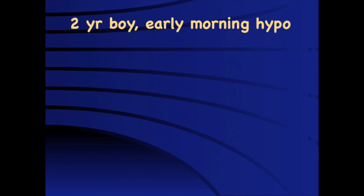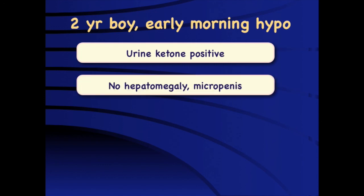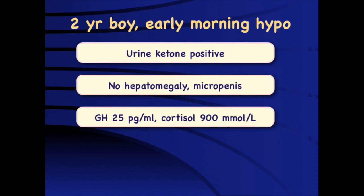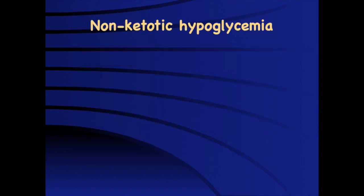Case 4: A two-year-old boy with early morning hypoglycemia, found not arousing in the morning with very low blood sugars. Urine ketones positive, no hepatomegaly, no micropenis, and growth hormone and cortisol levels were appropriately elevated — confirming a diagnosis of accelerated starvation. These children do not require much treatment; they need a nighttime snack and an early morning snack, and we need to be careful to prevent prolonged fasting, as there is a risk of hypoglycemia.